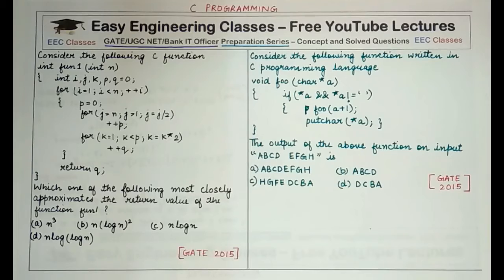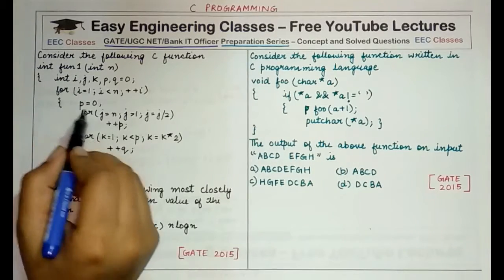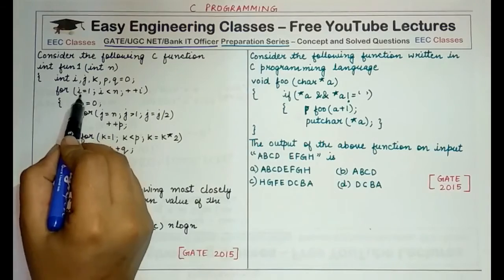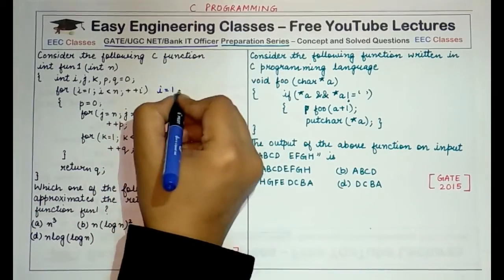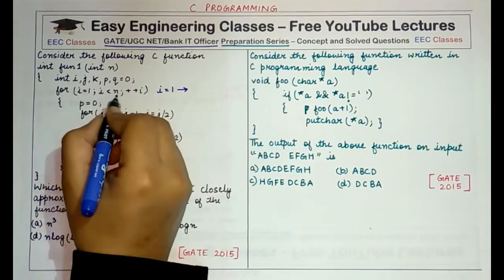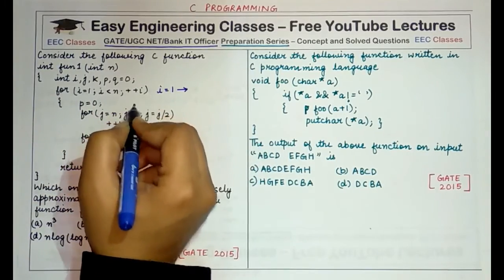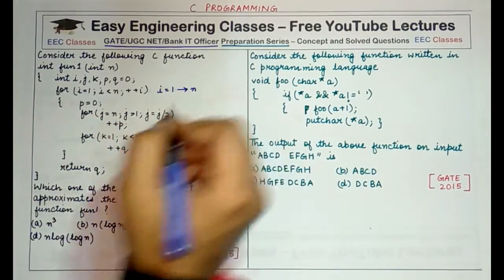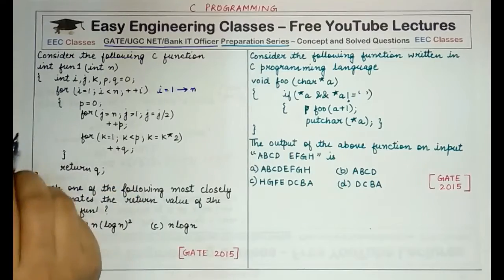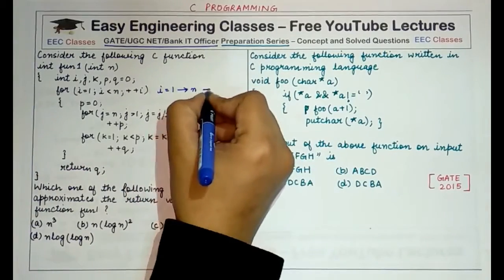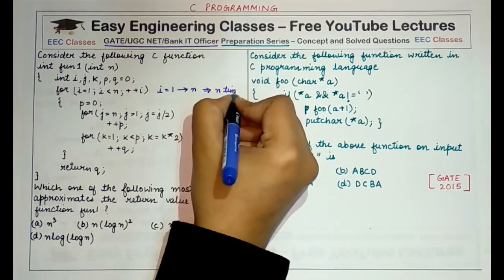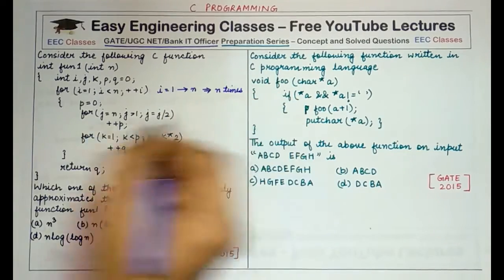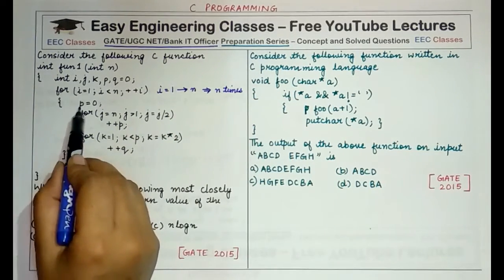In the first (outer) for loop, the variable i ranges from 1 and is incremented by 1 each iteration, going till n. Therefore it runs n times. Inside this outer loop there is a variable p and an inner for loop.